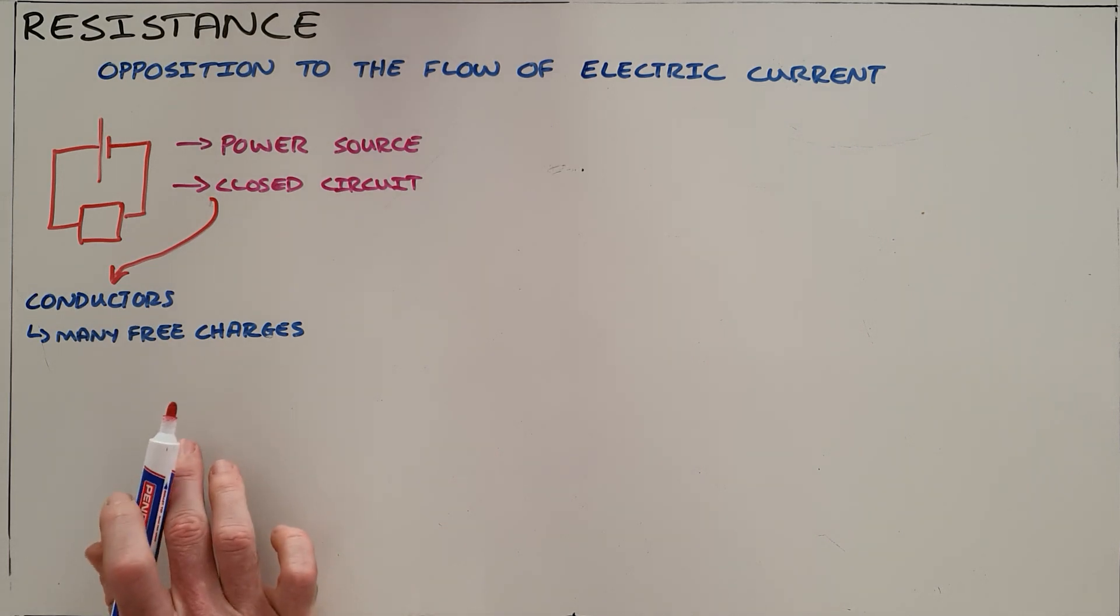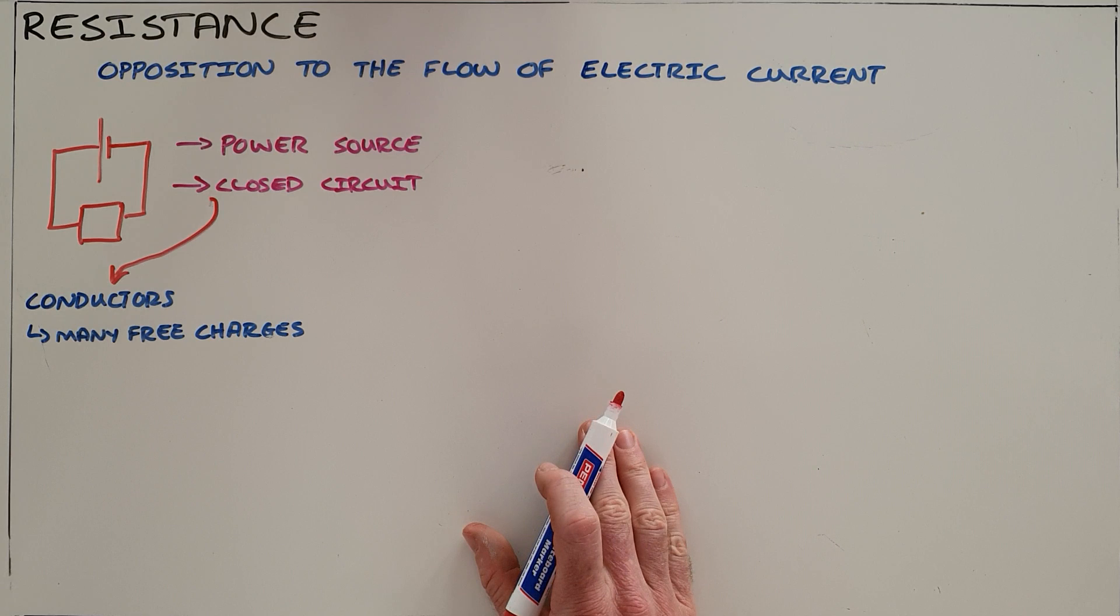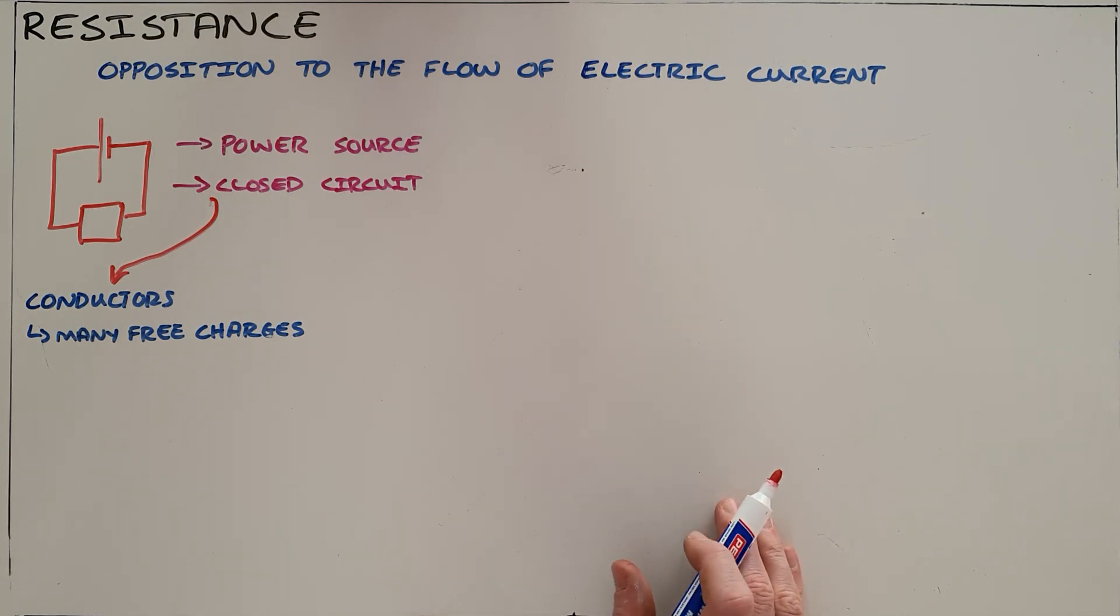Once we have an electric current, we can actually use that electrical energy to convert into other useful forms of energy, and we do that with resistors. Resistors are substances made of different materials that do not necessarily allow charge to flow through them as easily or as freely.